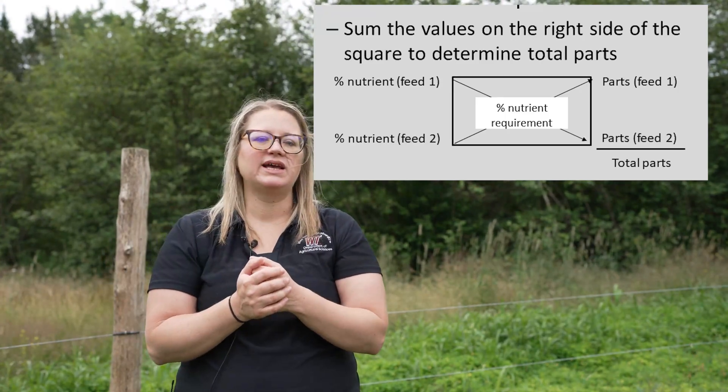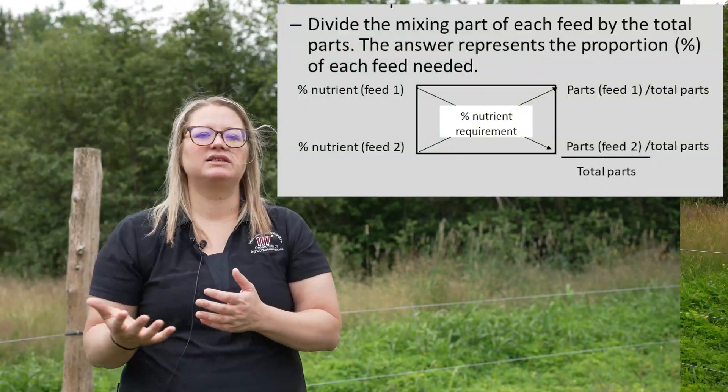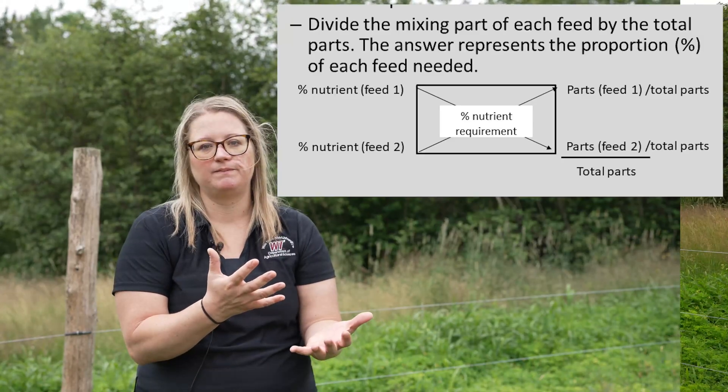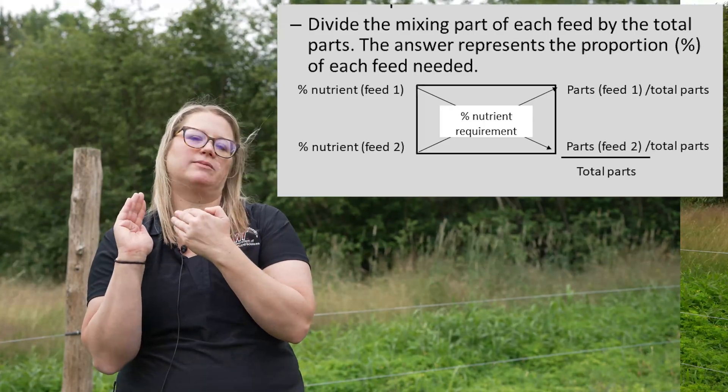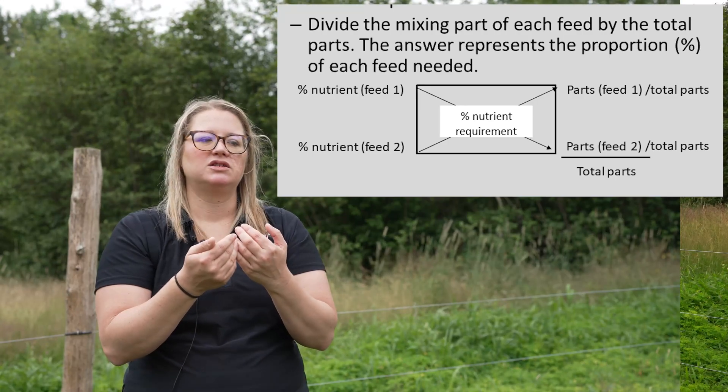The parts value represents the portion of each ingredient you're going to use. Add the parts together to get total parts. Then take the parts of each feed divided by the total parts — this is a fraction, part divided by the whole — to get the proportion. For example, take feed one's parts divided by the total parts, then multiply by 100 to get the percentage of that ingredient in the diet.